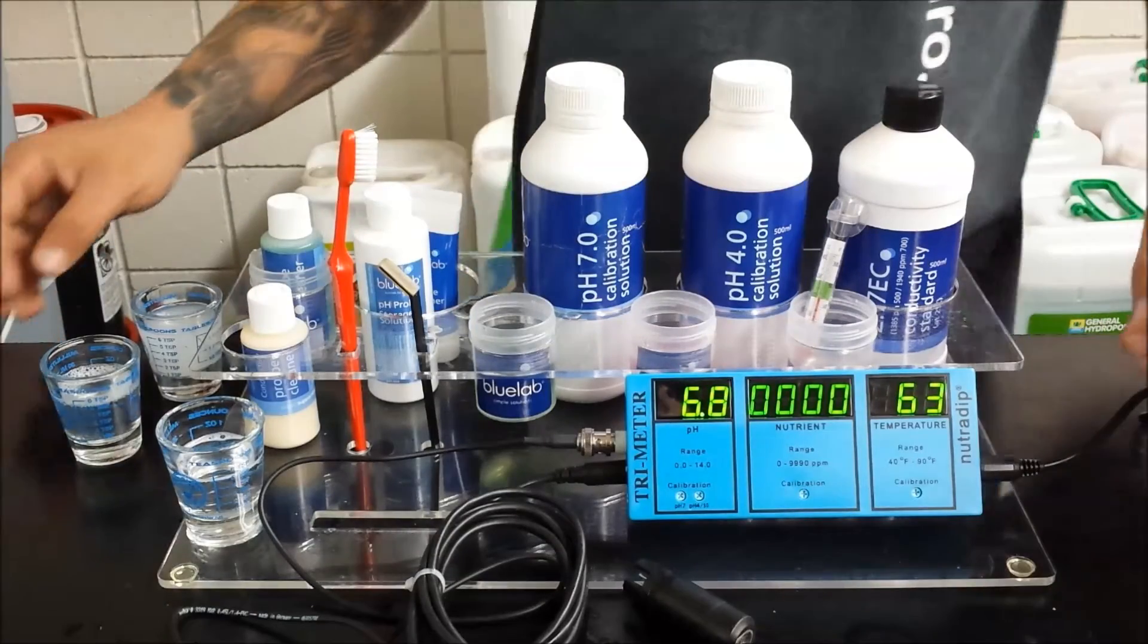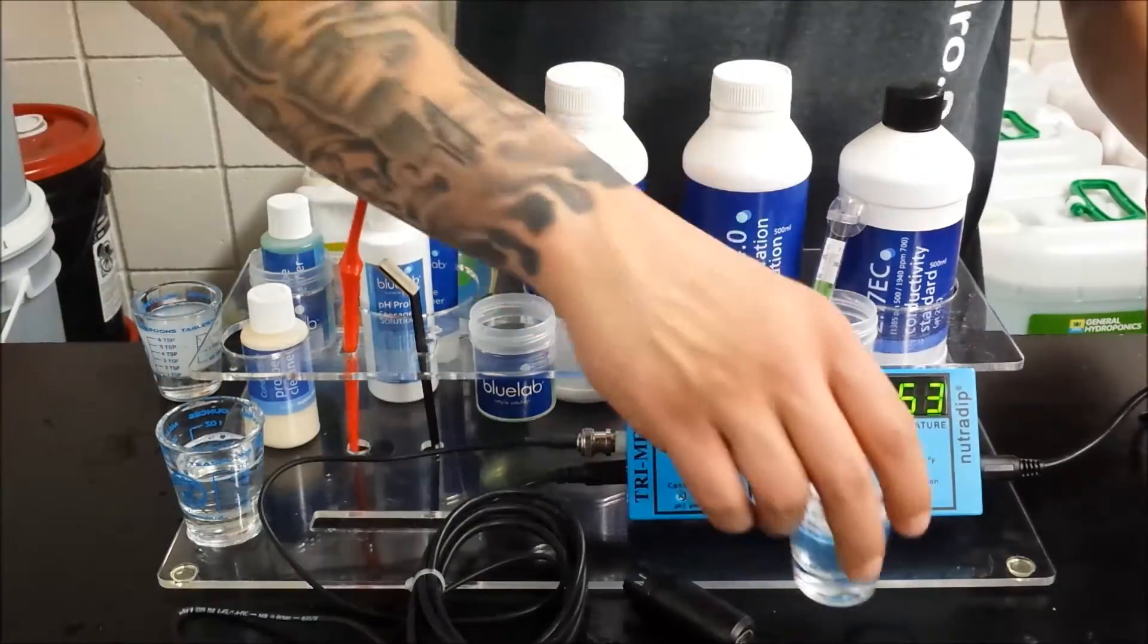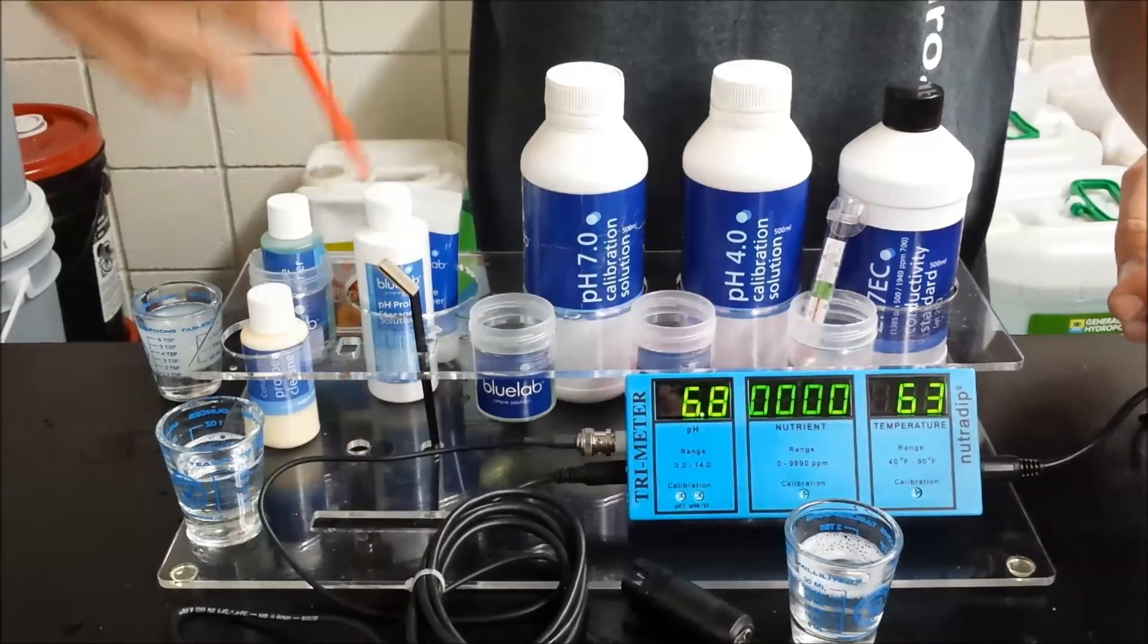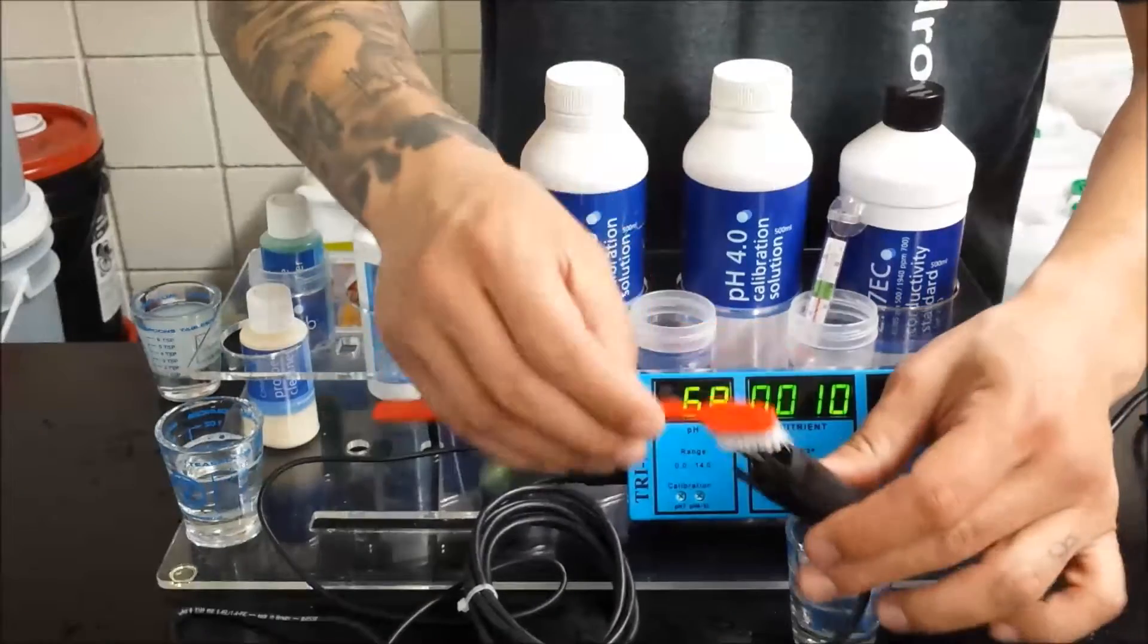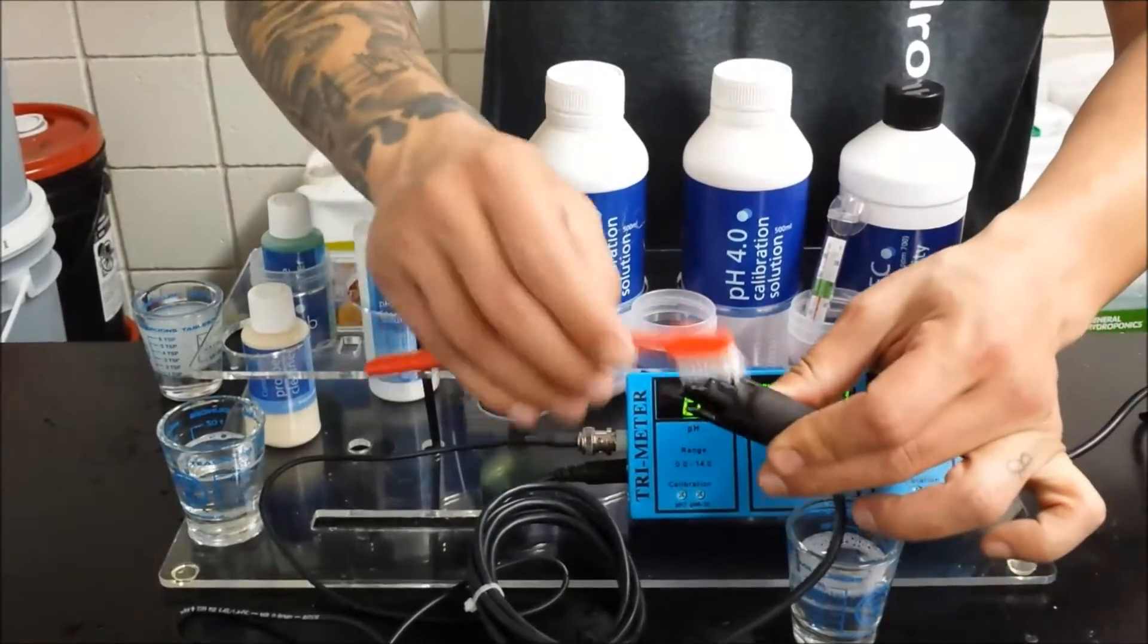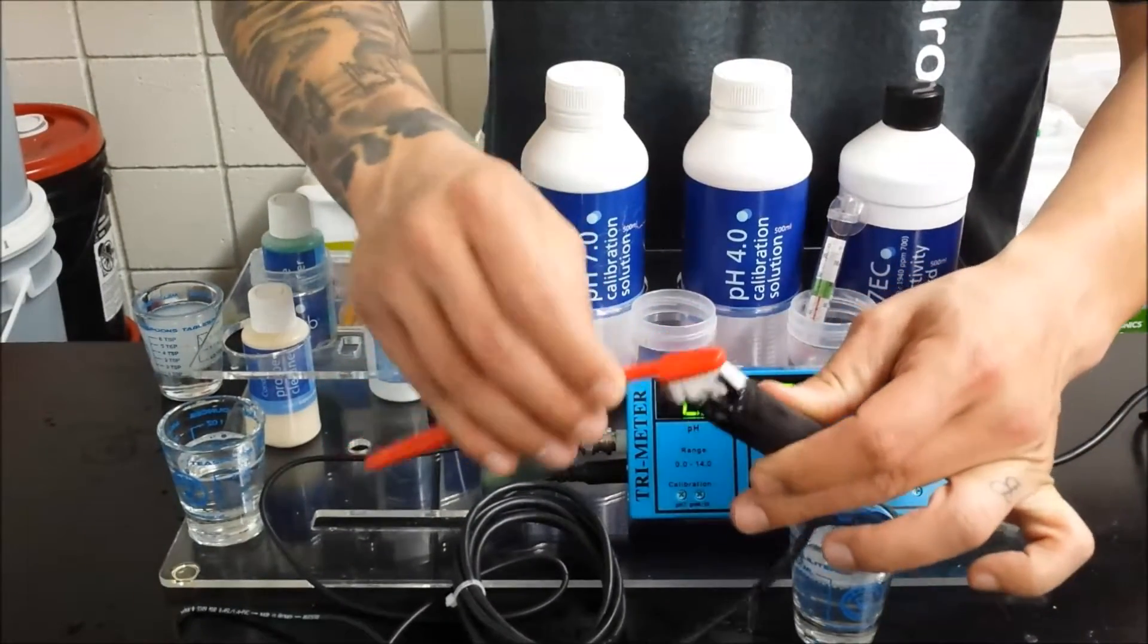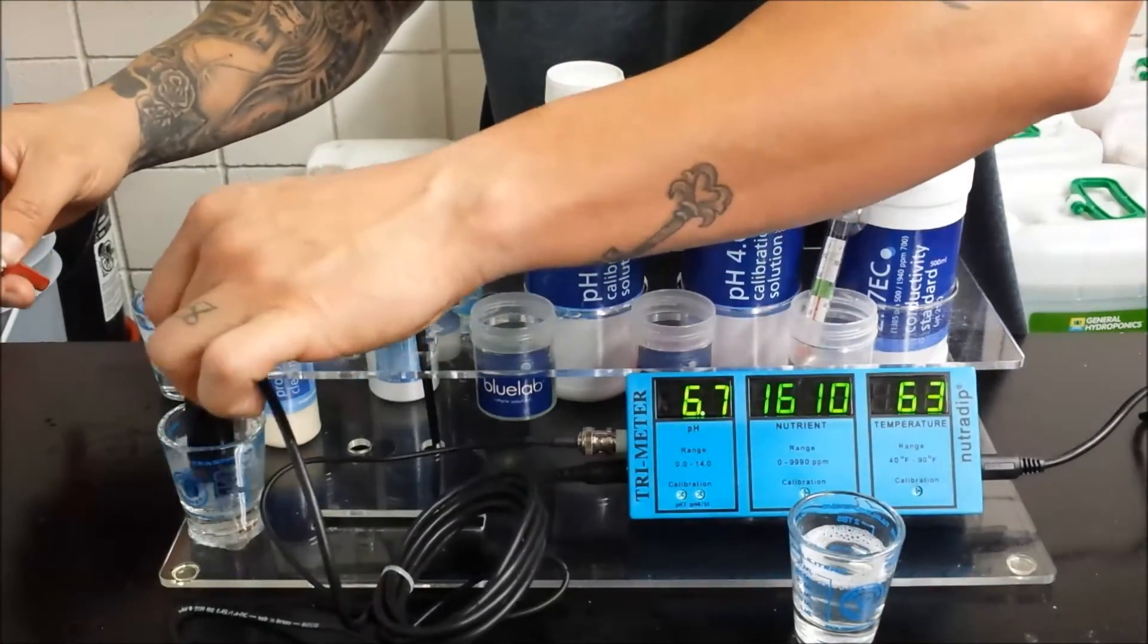First thing you want to do before calibrating your meter is make sure your probes are clean. Get some soapy water and a toothbrush. You're going to want to make sure to remove any old nutrient residue from your probe. Rinse it off in some water.